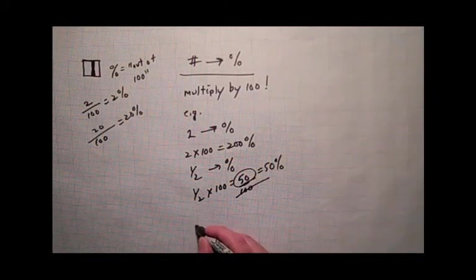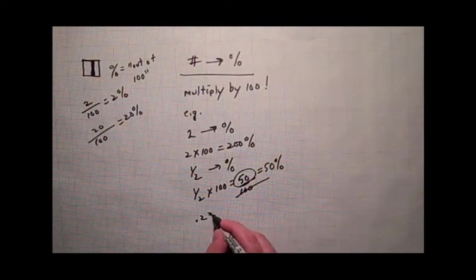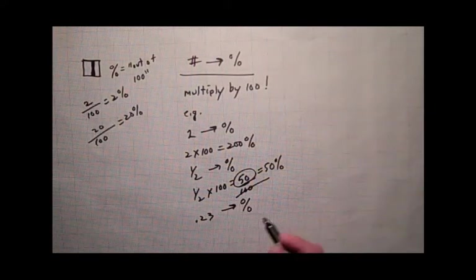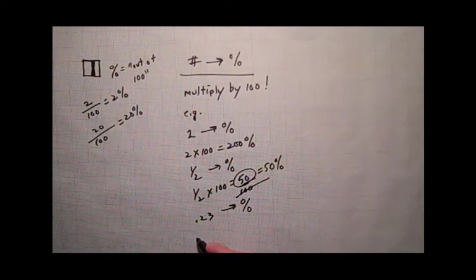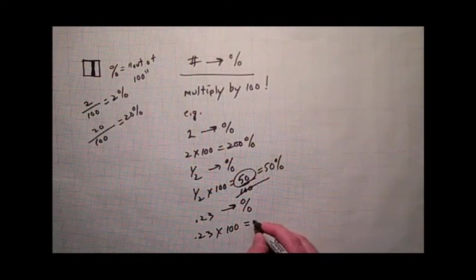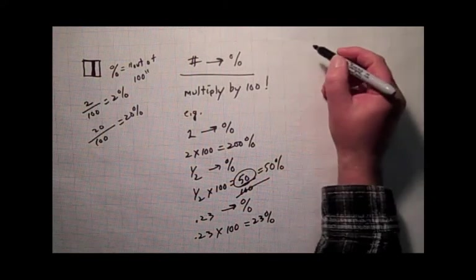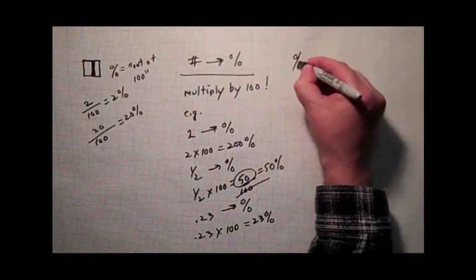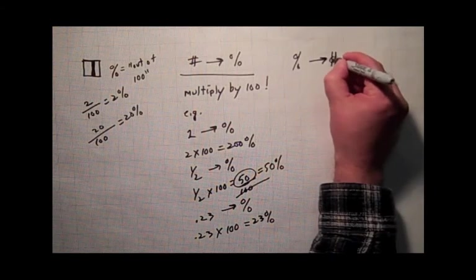Any other number will also work. How about 0.23? Convert that into a percent. We get 0.23 times 100 is equal to 23 percent. That's all there is to it. Going the other way is also pretty easy. We've gone from a number into a percent here. How about from a percent into a number?